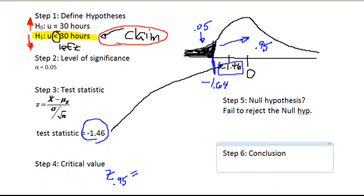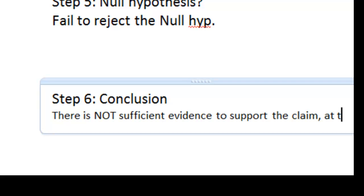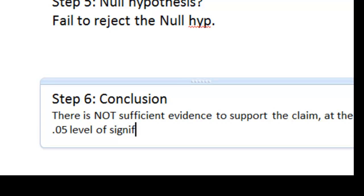So my final step then, in step six, is going to be that there is not sufficient evidence to support the claim. I can't just stop there, I have to be a little more specific. At the 0.05 level of significance - that's important because if it wasn't 0.05, if it was 10%, the result might be different. So I do not have enough evidence to support the claim at the 0.05 level of significance. That's where I'm going to stop, right there, it's as much as I need to state.